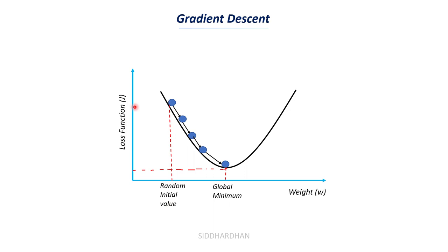We start with a random initial model parameter value. If the loss function value is higher at this point, we gradually change the parameter value until it reaches the global minimum. If the random weight is at a high value like 20, we reduce it to reach the global minimum. In linear regression, there is one global minimum. Gradient descent works using differential calculus.